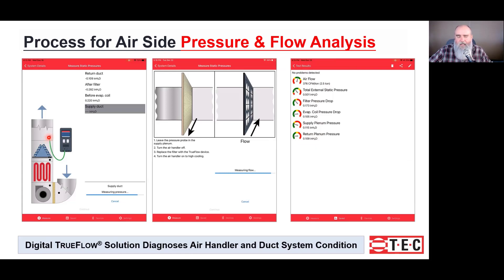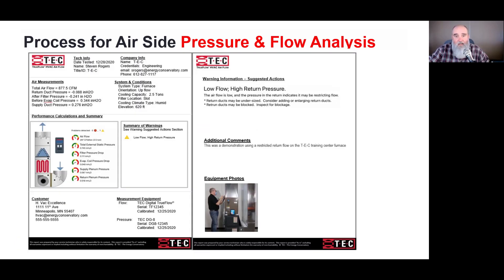So far we've only talked about taking a reading in the supply, but we can see some other information here. The supply measurement is shown, but it also shows several places where we could measure the pressure drop across the evaporator coil, or get external static pressure. All those different measurements are listed, and one thing I really like is that it gives us gauges in an easy-to-understand format — red, yellow, and green.